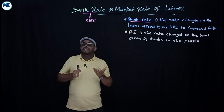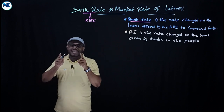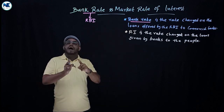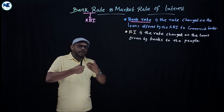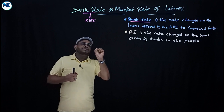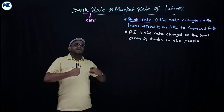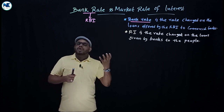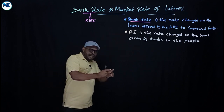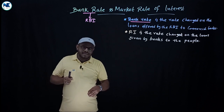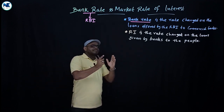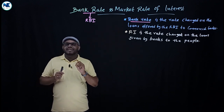Now, what about the market rate of interest? Market rate of interest is the rate of interest provided in a market. It may be determined by the commercial banks of the country. So the market rate of interest is the rate that exists or is provided in a market, and it is actually determined by the commercial bank of the country.